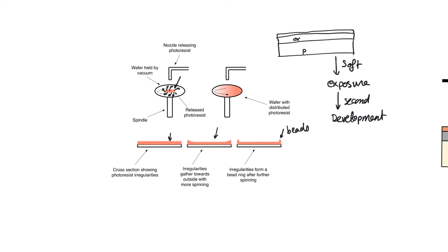It's important to note that it's wrong to assume that exposed photoresist completely dissolves in the solvent while unexposed photoresist does not. In reality, the rate at which exposed photoresist dissolves is higher than that of unexposed photoresist, and how much higher depends on the amount of baking done. More baking reduces the differential solubility between the two, reducing our ability to form features — which is why the hard bake, which completely solidifies the photoresist, is reserved until after development.